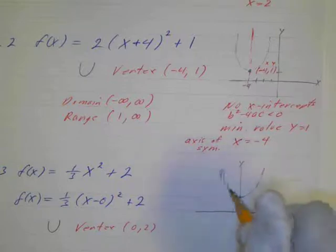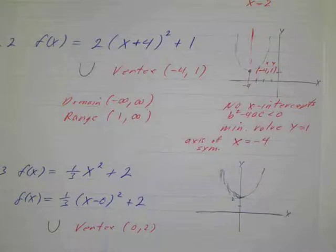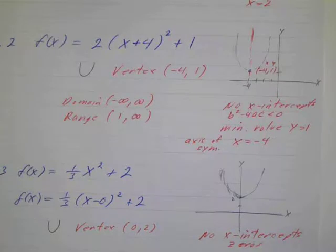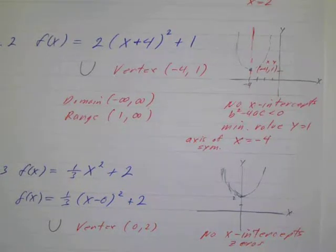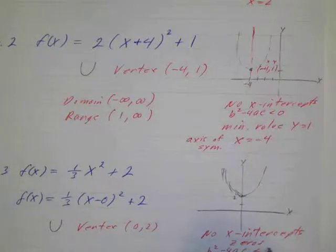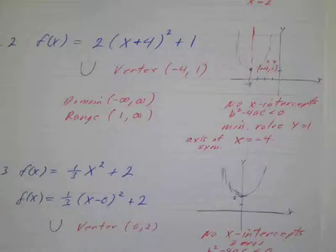And again, you can see that it has no x-intercepts or no zeros, no x-intercepts. Or we can say no zeros or no roots that are real. So they're complex imaginary, so we know that our discriminant b squared minus 4ac has got to be less than 0 because we don't have any roots.